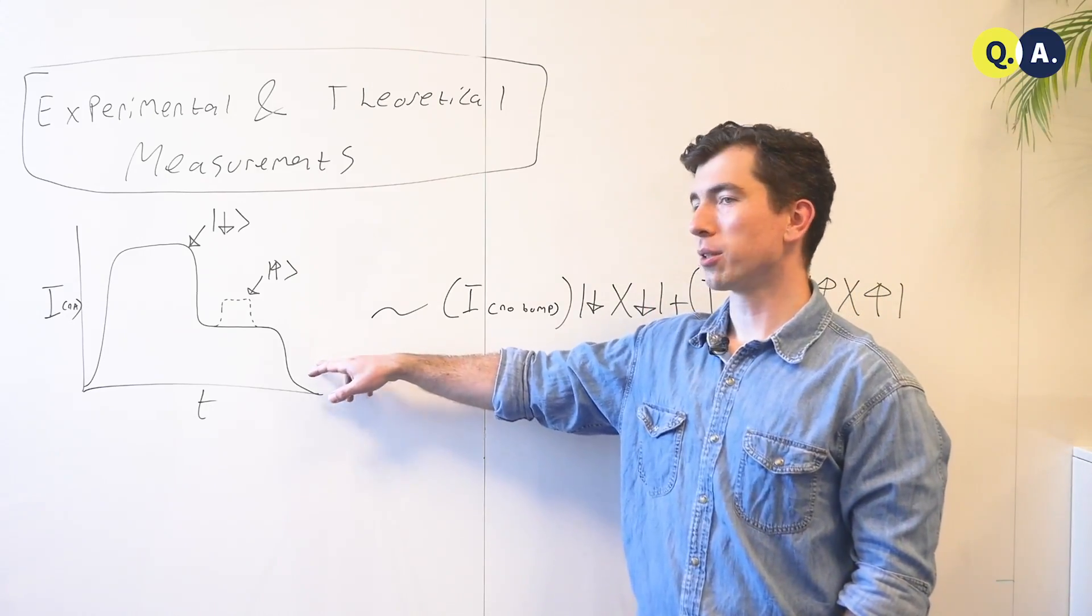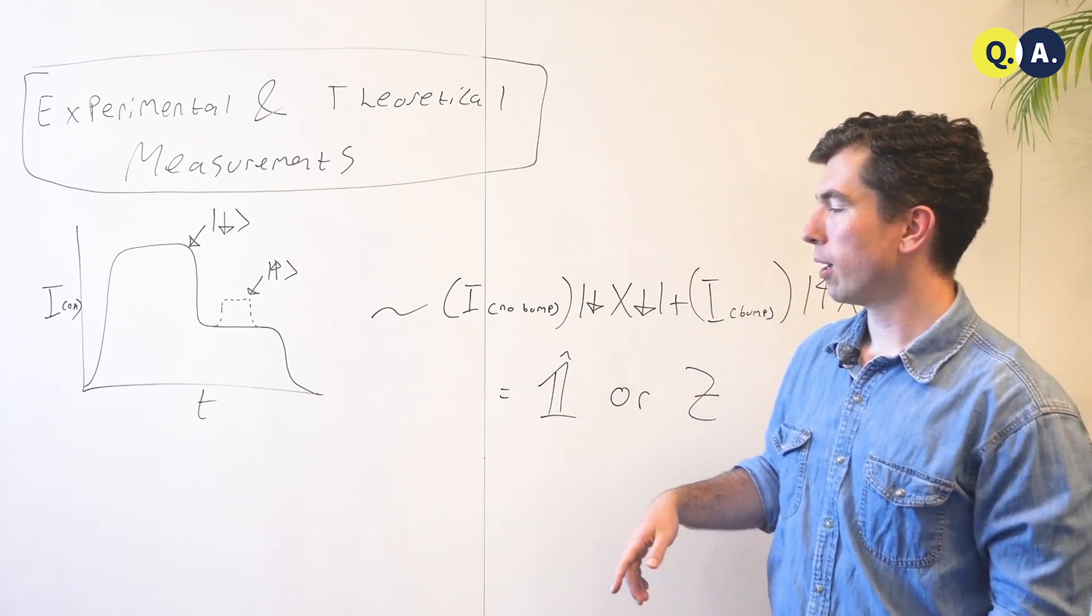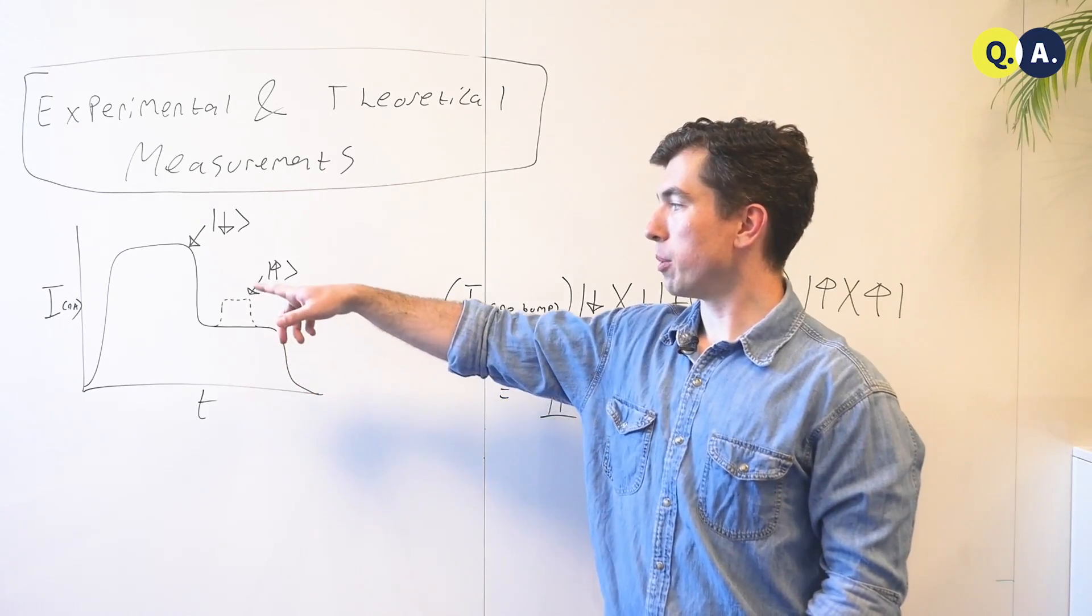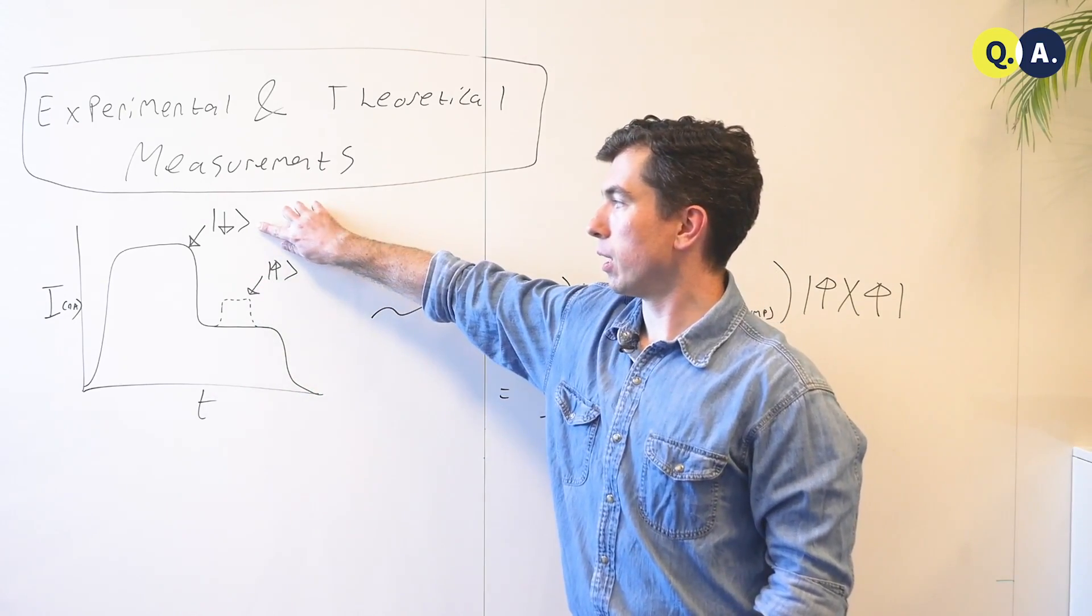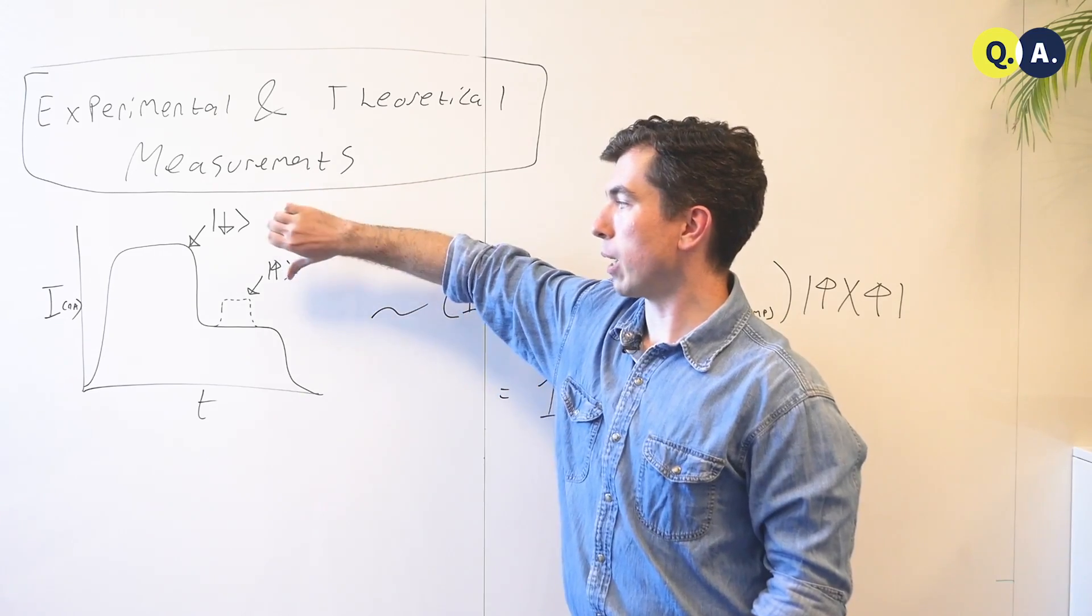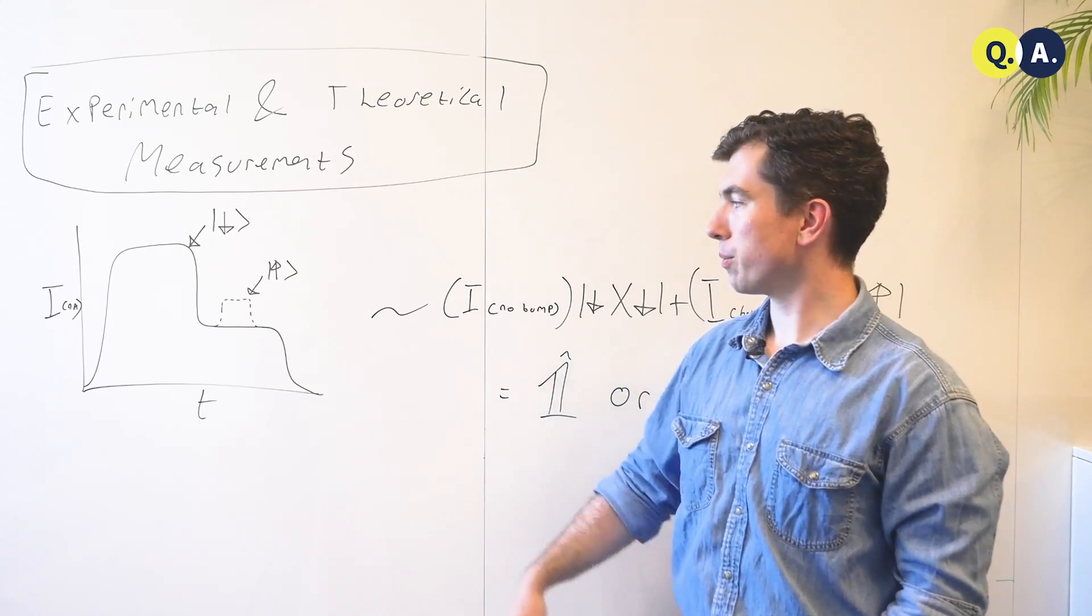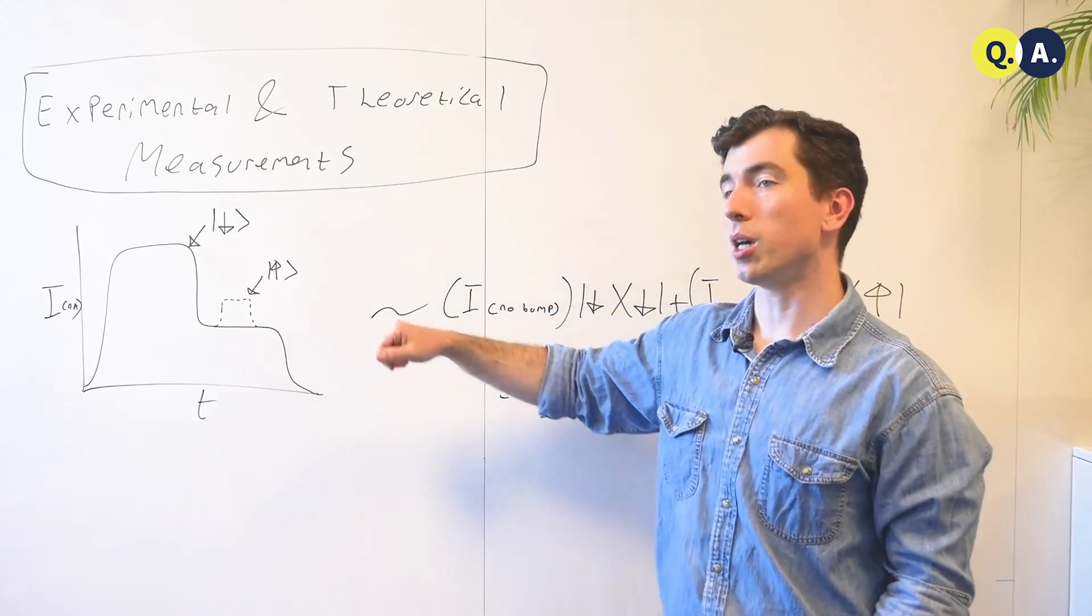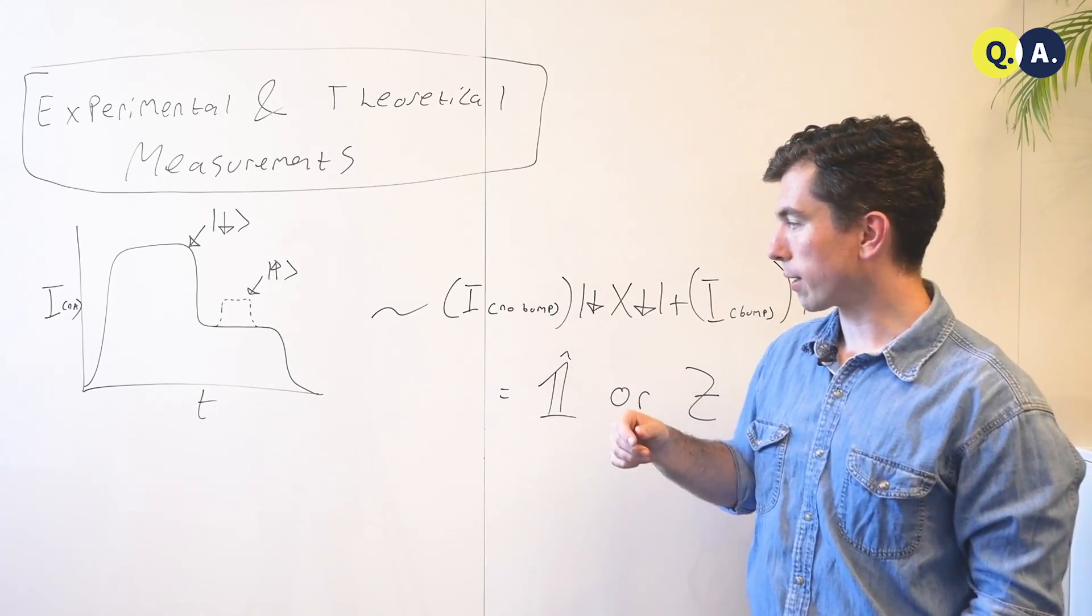So you may have seen already a picture like this one. My apologies to my experimental friends if it's not exactly the same. But in the laboratory, you can measure some currents in nanoamperes. If there's a spin in the down state pointing parallel to the field, there will be no bump in the current. And if it's in the up state, there will be a bump. This is a large macroscopic classical signal that they can detect.